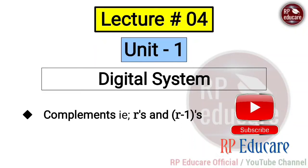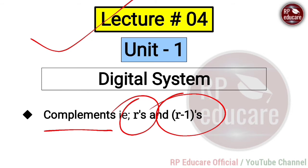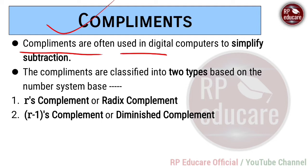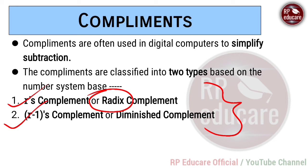Dear students, welcome to my YouTube channel RPHGear. This is the fourth lecture of Digital System Design subject. In this lecture we will study about complements — that is r's complements and r-1's complements. Complements are often used in digital computers to simplify subtraction. Complements are classified into two types: first is r's complements, also known as radix complements, and second is r-1's complements, also known as diminished complements.